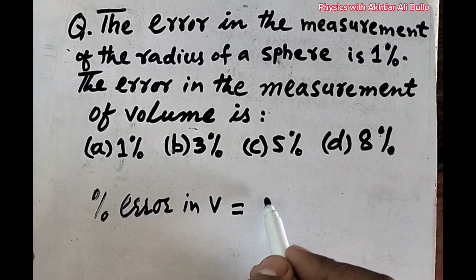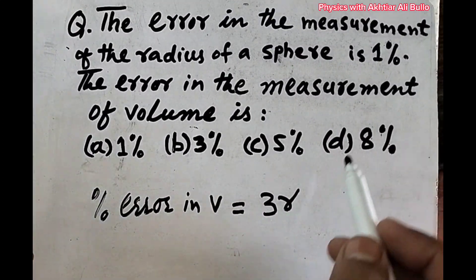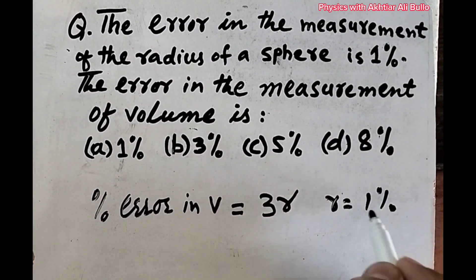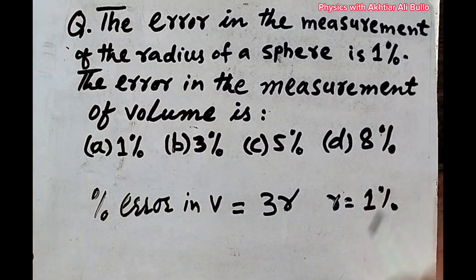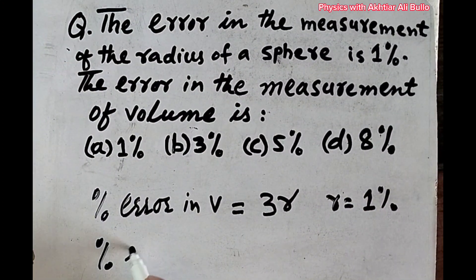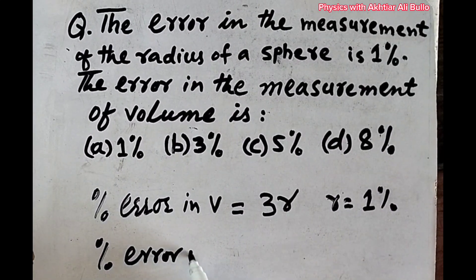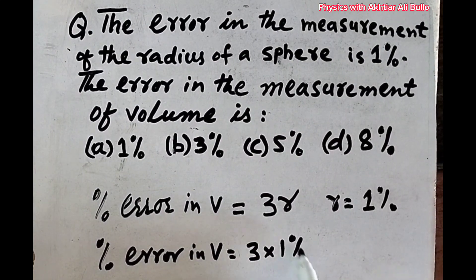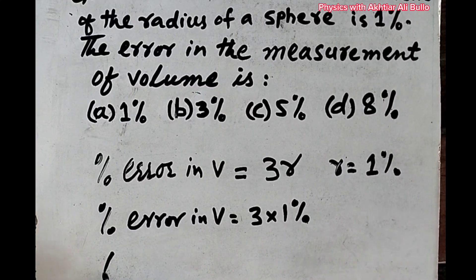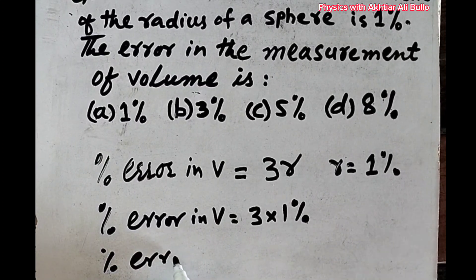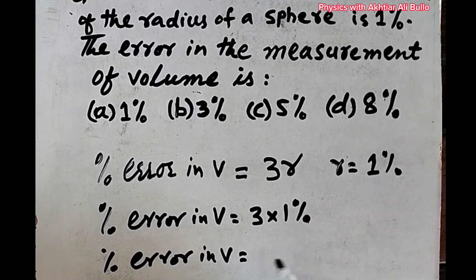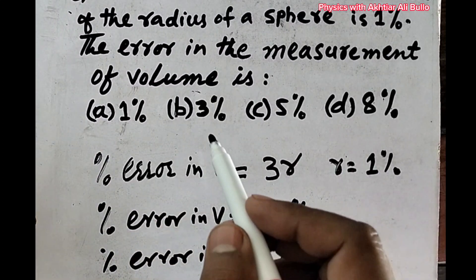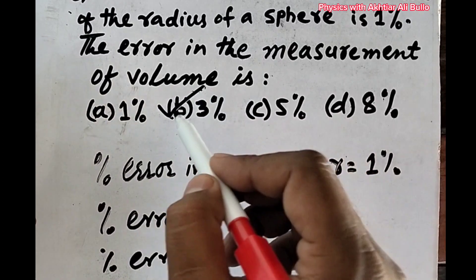The percentage error in volume is calculated using the formula V ∝ r³. Since the value of r is 1%, the percentage error in volume will be equal to 3 × 1% = 3%. So the correct option is b) 3%.